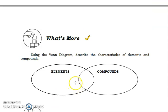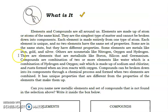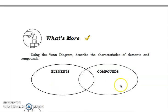Let's move on with the fifth activity, which is the what's more. Using the Venn diagram, we're going to describe the characteristic of elements and compounds. Write down the characteristics here of the elements and write down the characteristic of compounds here. You can read back the portion of the what is it for you to answer what's more.